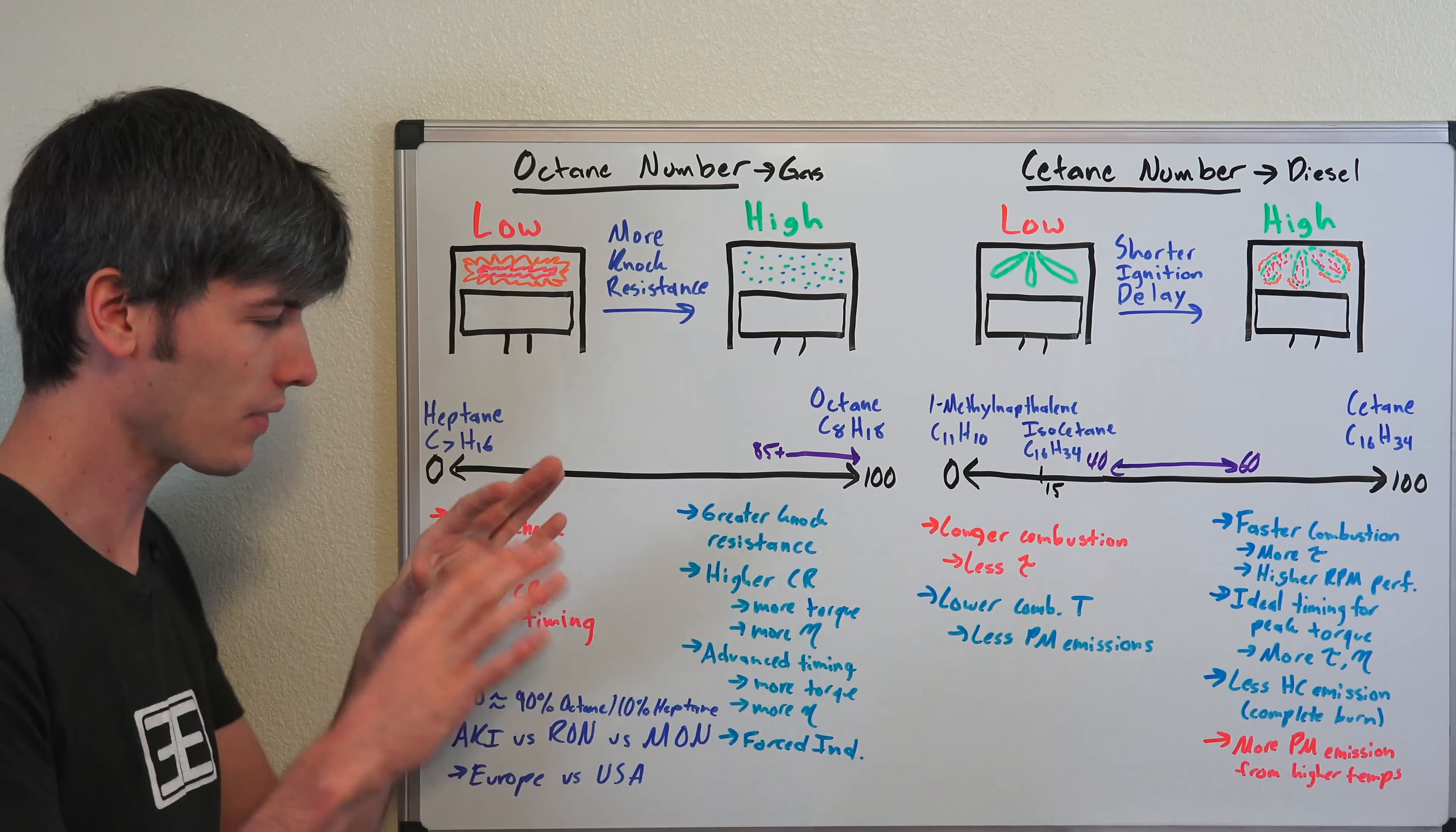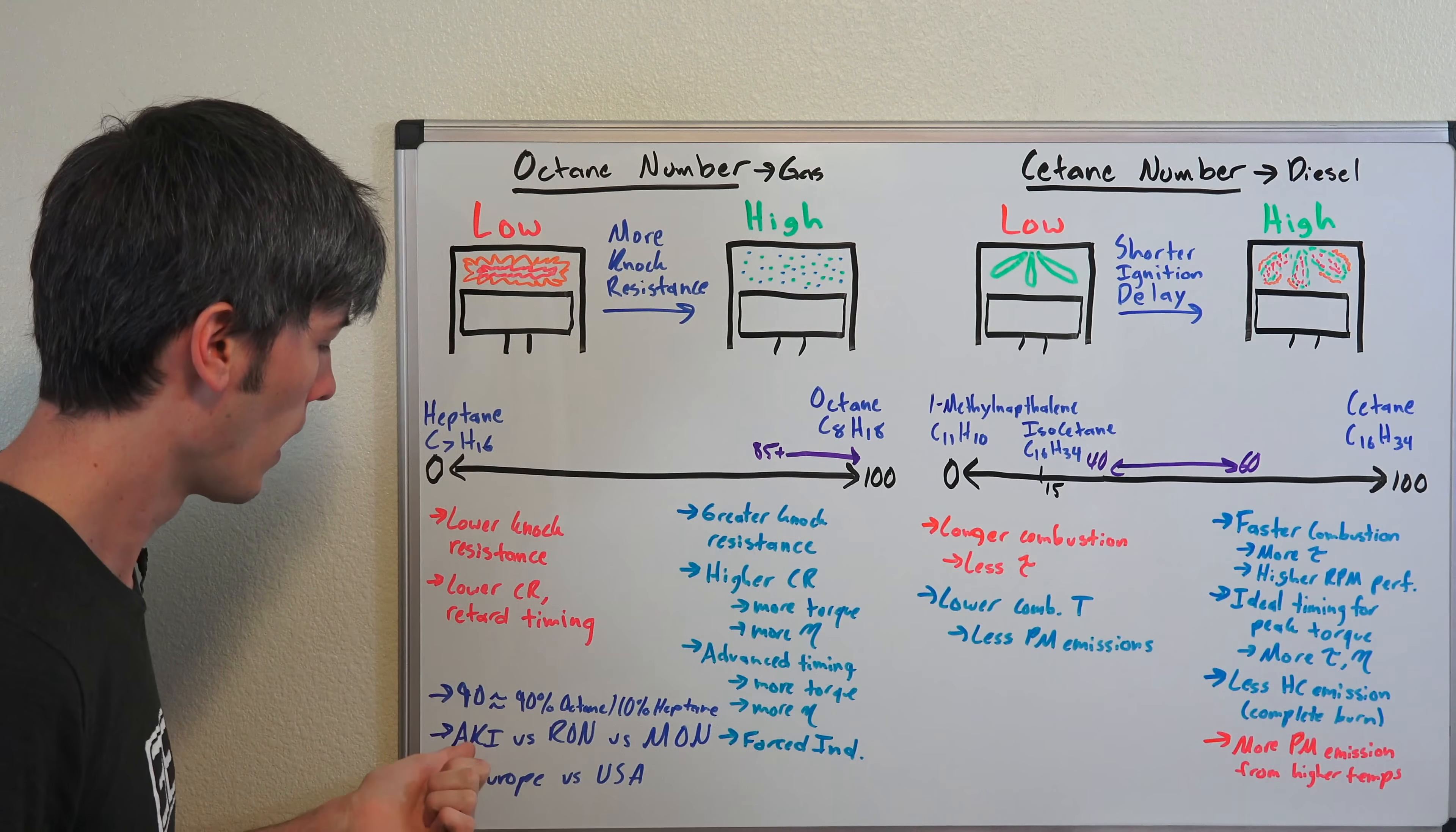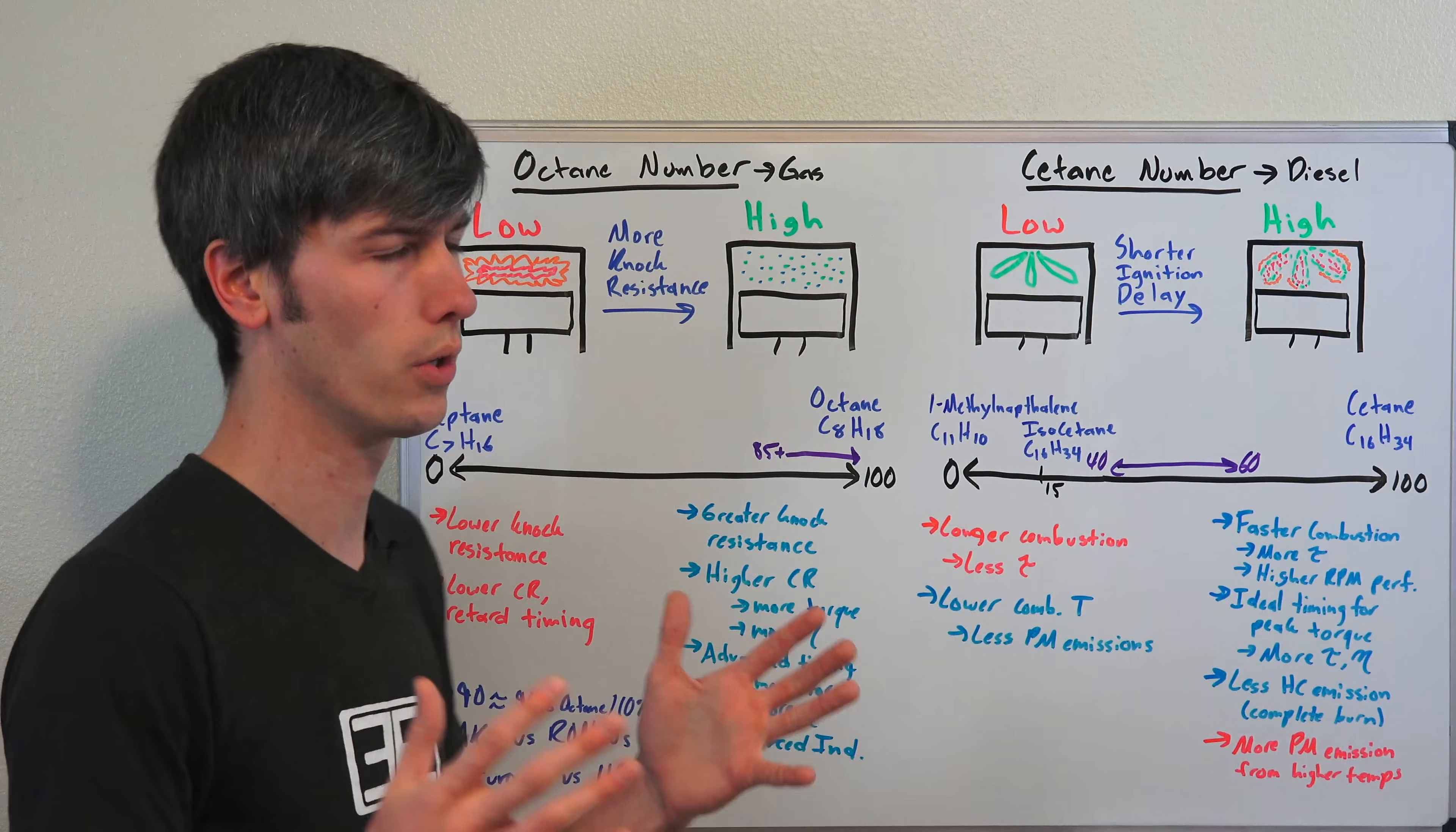One thing that always comes up when talking about octane ratings: everyone in Europe says US fuel quality is terrible and our octane ratings are super low. We use different scales. The US uses AKI versus Europe uses RON, and RON tends to be a higher number even if the fuels are the exact same. I'll have a separate link which you can check out if you're curious about the different rating scales.